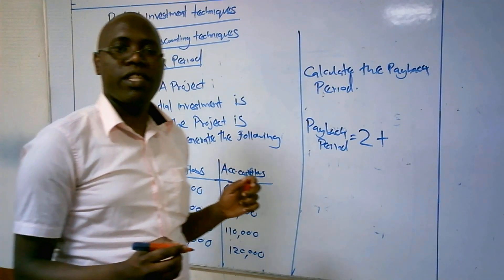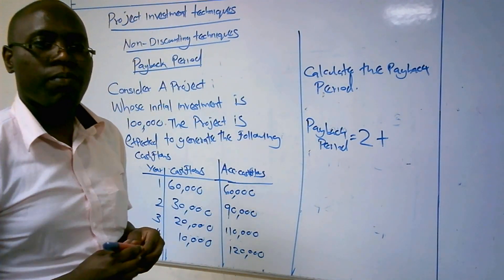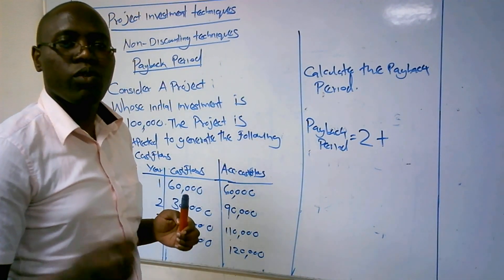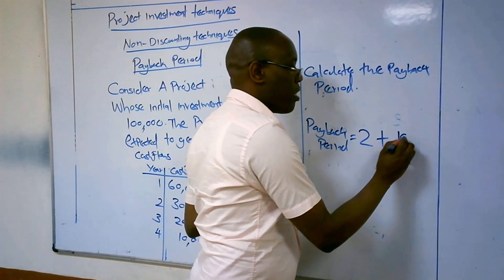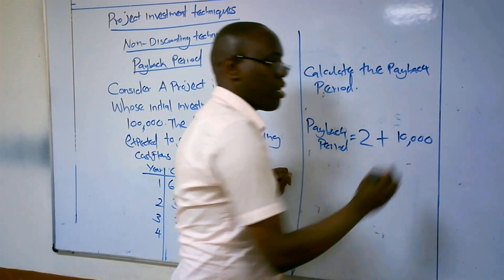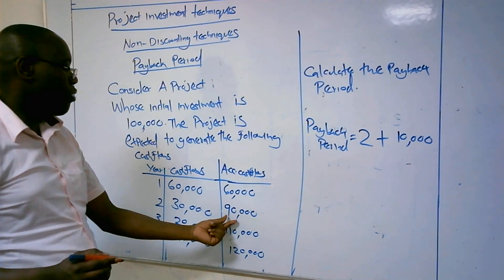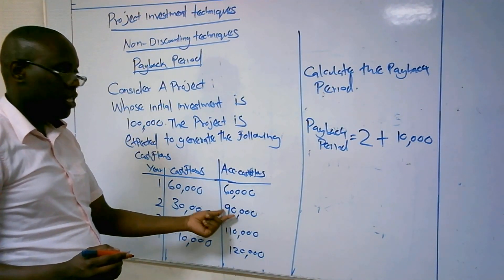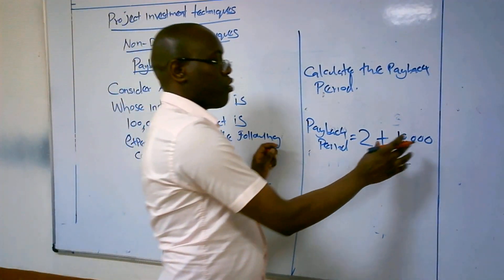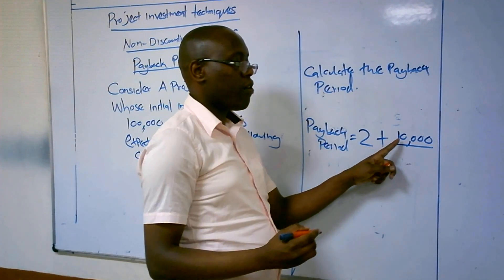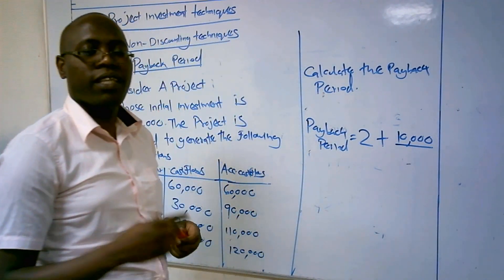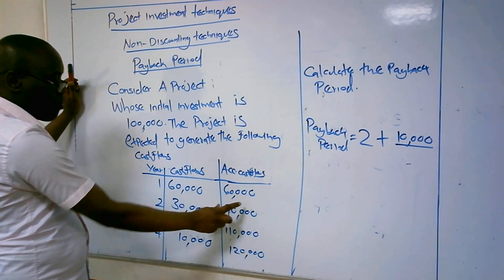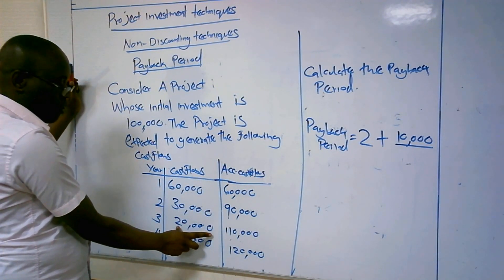You take year two and then add the amount remaining to recover the initial investment. In year two, you recovered $90,000. So the amount remaining is $10,000, because the initial investment was $100,000 and we only recovered $90,000. That remaining $10,000 will be recovered in the next year — year three — using year three's cash flows.